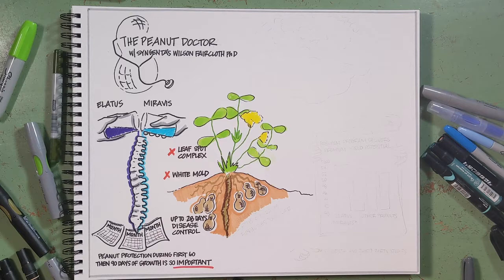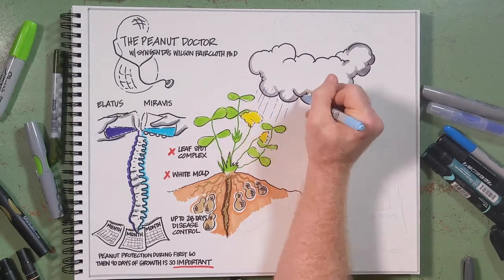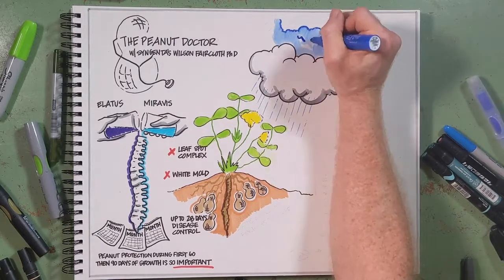Why do we need up to 28 days of control? Well, growers have a lot of demands on their time and sometimes we can't be timely. Sometimes we have rain and thunderstorms. Here in the southeast we're prone to tropical storms or hurricanes.